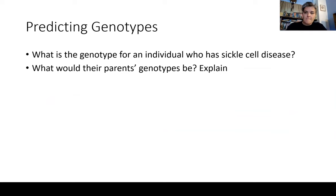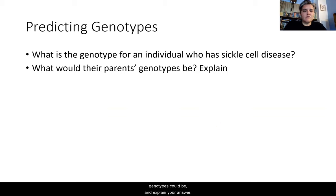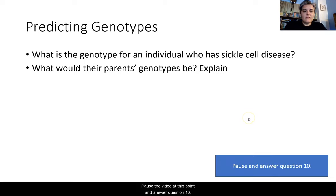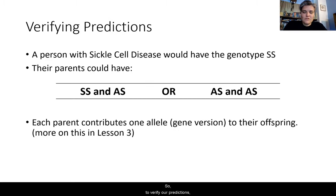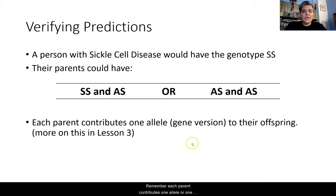Taking all of that information, we'll now use it to predict what the parents' genotypes could be. Recall that the genotype for an individual with sickle cell disease is SS. Their parents must have one of two possibilities: SS and AS, or AS and AS. Remember, each parent contributes one allele or one gene version to their offspring — we'll learn more about that in lesson three.